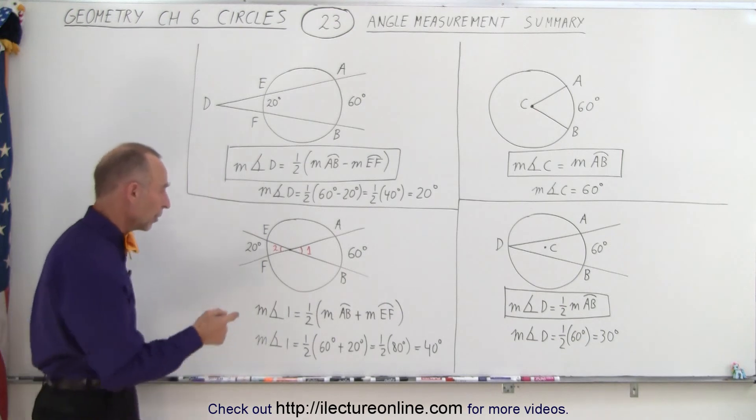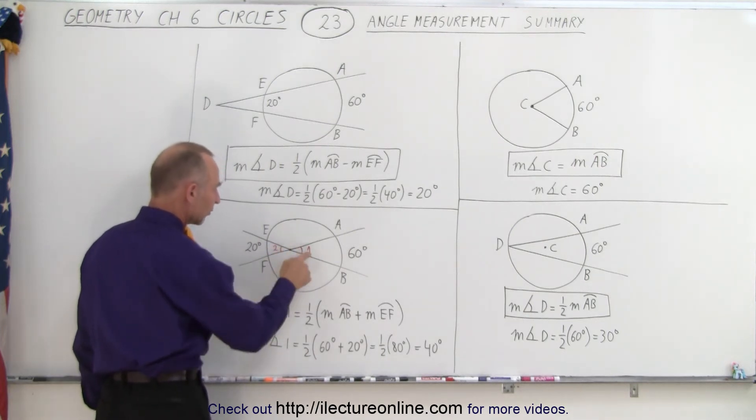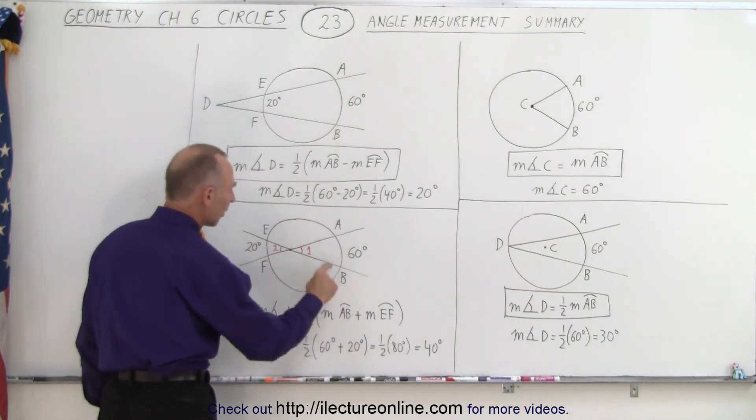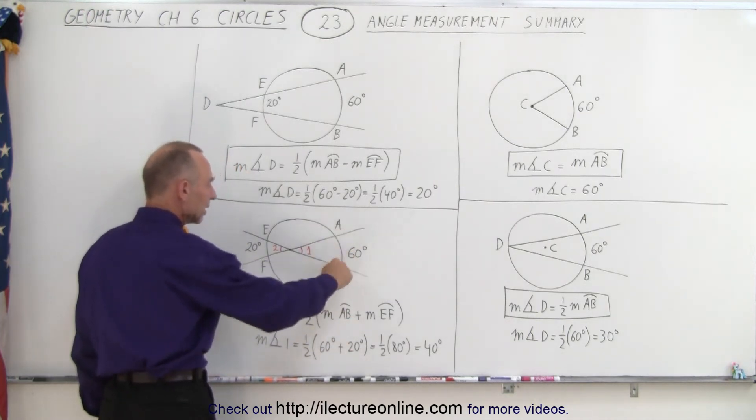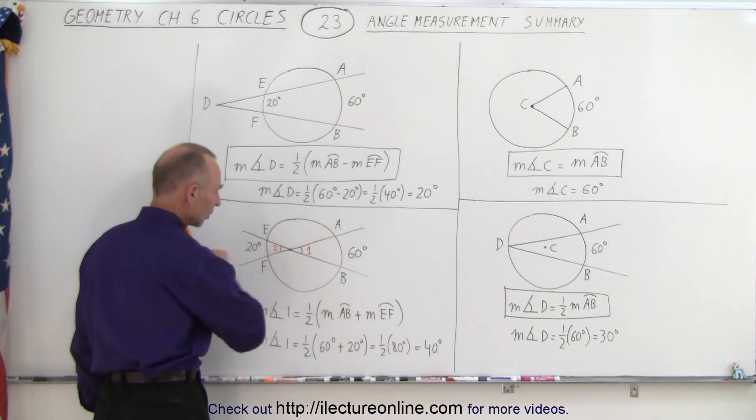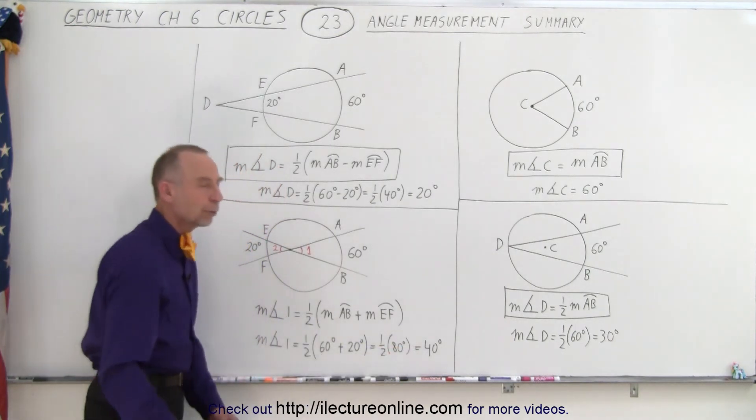And then finally, if we put the point of the angle inside the circle but not at the center, then the measure of the angle, either angle one or angle two, is equal to one half times the sum of the measure of the intersected arc on one side plus the measure of the intersected arc on the other side. So in this case, if it's 60 and 20 degrees, we add them together, take one half, and you get 40 degrees.